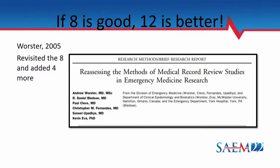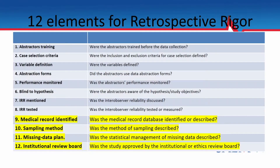About ten years later, Worcester said if eight is good, twelve is better. Worcester added four more to the list: the Institutional Review Board, handling missing data — which is more complicated and may require a statistician — sampling method, which relates to how you're finding your patients, often via ICD-10 EHR searches, and medical record identification. Different sampling approaches can also introduce bias.